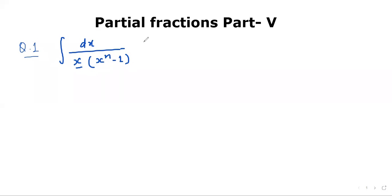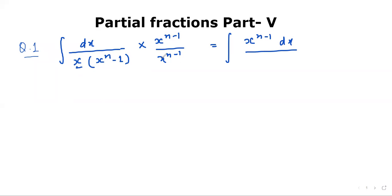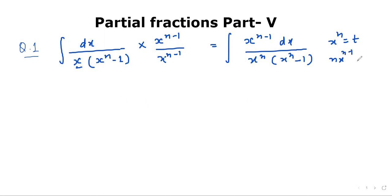What we can do? We can multiply by x power n minus 1 in the numerator and denominator. So x power n minus 1 dx divided by x times x power n minus 1 will become x power n times x power n minus 1. Now we can put x power n equal to t, then n times x power n minus 1 dx equals dt.